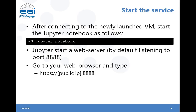After logging into the virtual machine, you can start the Jupyter Notebook with the command 'jupyter notebook'. After this step, Jupyter starts the web server. Then go to your web browser and type the public IP of your machine followed by port 8888, and you should be able to reach the Jupyter Notebook you just created.